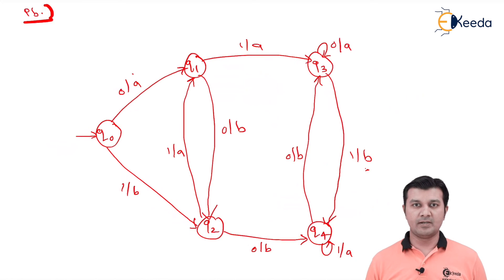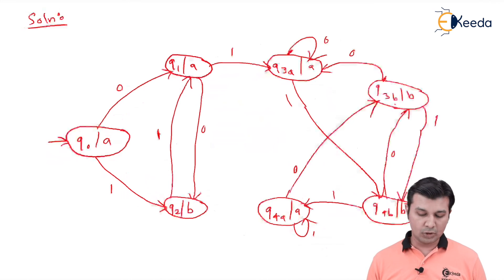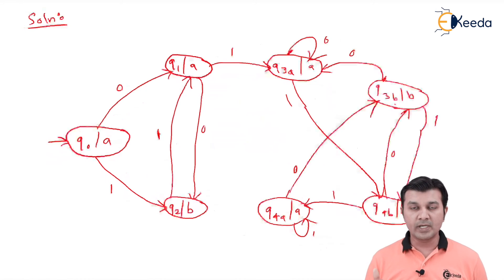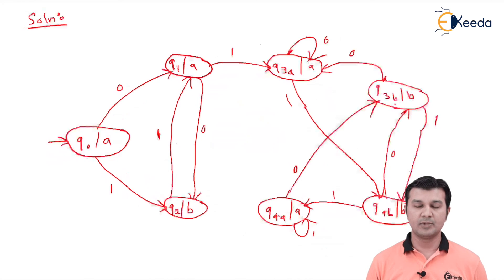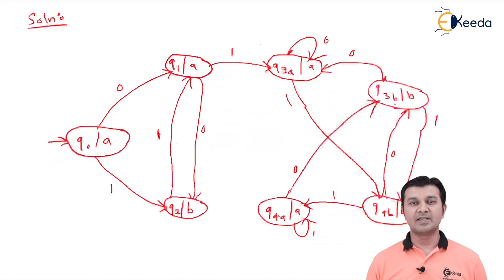Looking at the solution: q0 has no incoming transitions; q1 and q2 were not split because all incoming outputs were the same; q3 and q4 needed splits because their incoming outputs were different. This is the procedure to convert a given Mealy machine to a Moore machine. See you in the next session where we will start the new chapter on Grammars. Thank you very much.